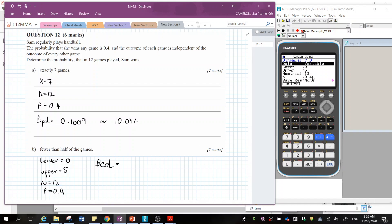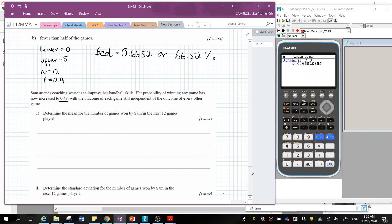Now I've got 0, 5, 12, 0.4. So when I enter that in, I'm going to write it down to four decimal places. Or if I want to express that as a percentage, it's 66.52%. Is her chance that she is going to win fewer than half of the games.